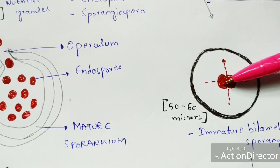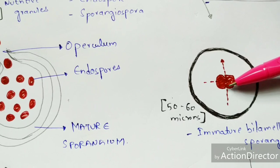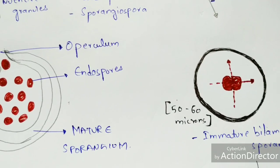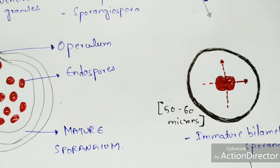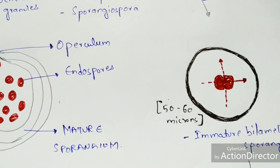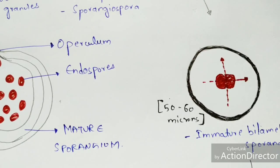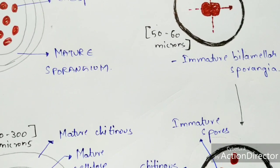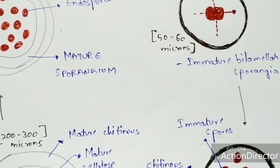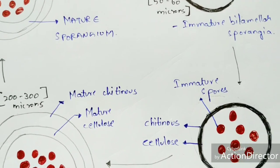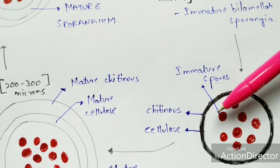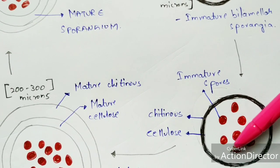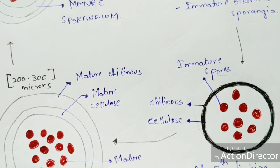In the immature bilamellar sporangia stage, the nucleus inside the cytoplasm undergoes mitotic divisions. After this stage, it progresses to the next stage, which still consists of an immature stage — spores are formed inside the cytoplasm. These are called immature spores.